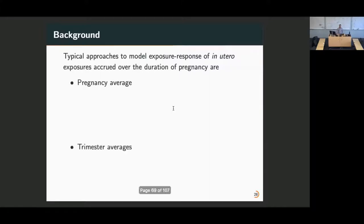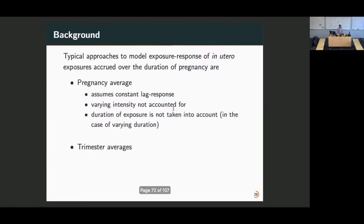How do we deal with the fact that you're exposed for the duration of the pregnancy, but not necessarily all the exposures are worth the same during the pregnancy? Typically, most studies use either an average over the duration of the pregnancy, or they take separate averages for specific trimesters. Both of these approaches are problematic. Reasons are because they're assuming a constant lag response. We're assuming that the exposure during your first week has the same weight as your exposure in week 25, or 32, or 12. It doesn't account for the fact that we have a lot of variability in the exposures during pregnancy. Also, the duration of exposure is not taken into account. If you have different cumulative exposures, that's not taken into account.